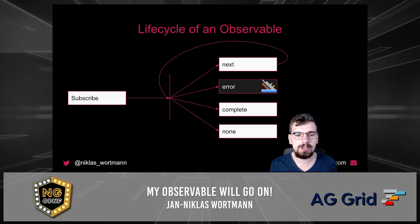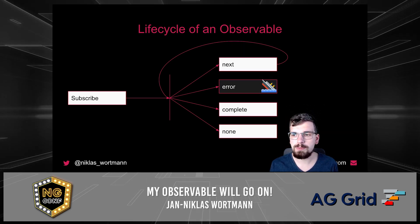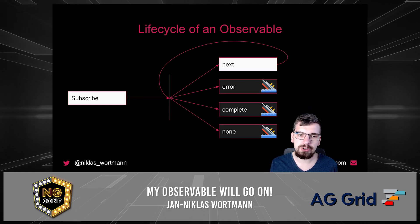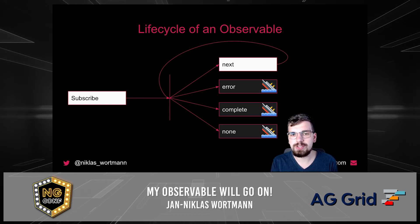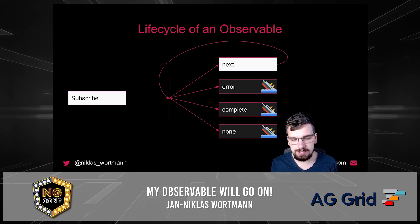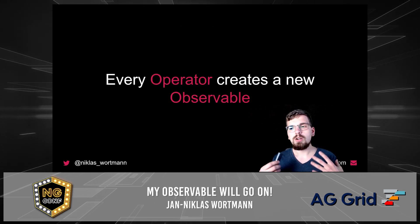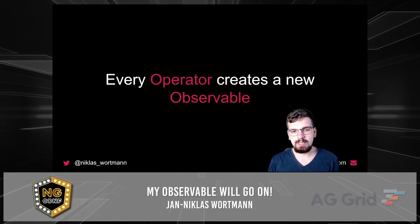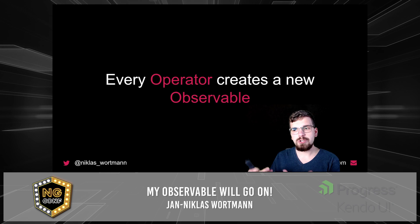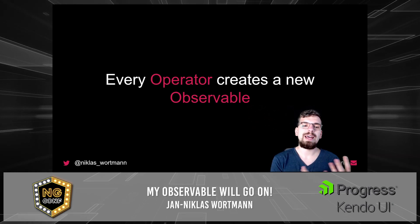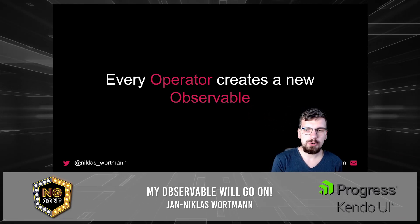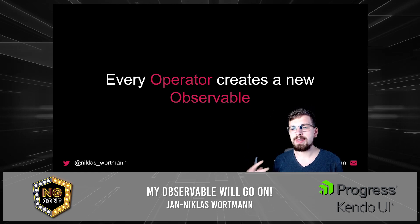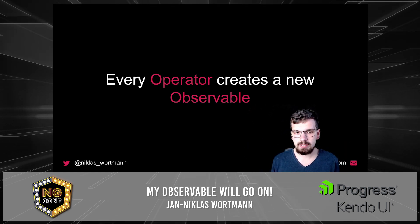In case of an error, the observable life cycle ends. The same actually goes for complete, and kind of for none, as there's nothing happening in that scenario. We've talked a lot about the observable itself and its life cycle, but you also have to consider that every single operator in RxJS creates a new observable and therefore they have their own life cycle.